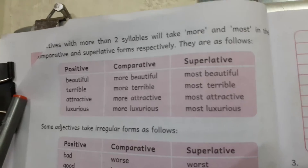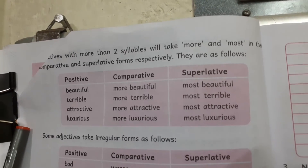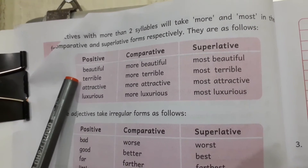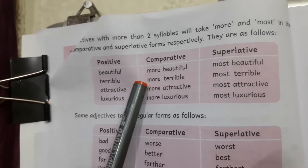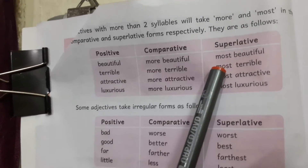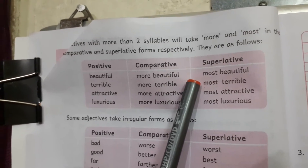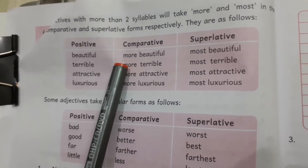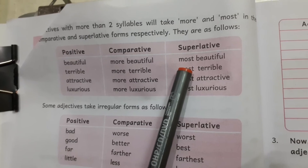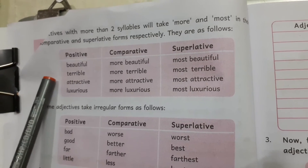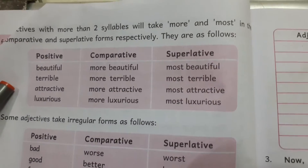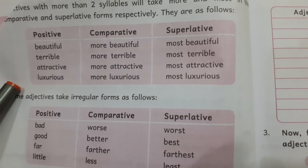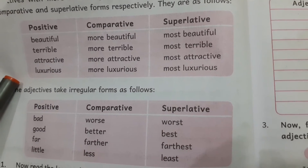Adjectives with more than two syllables take 'more' and 'most' in the comparative and superlative forms respectively. For example: beautiful, more beautiful, most beautiful. Second example: terrible, more terrible, most terrible. Further examples: attractive, more attractive, most attractive; luxurious, more luxurious, most luxurious.